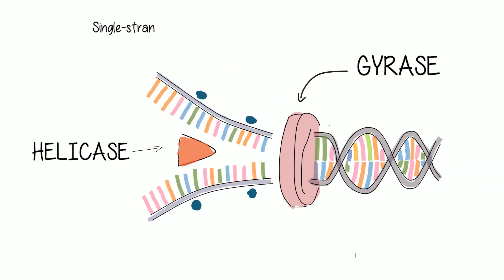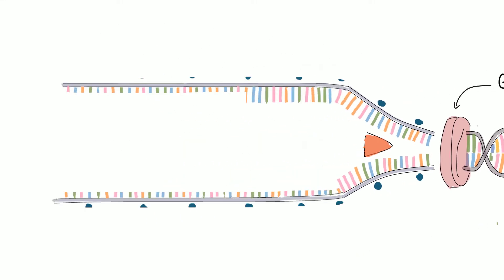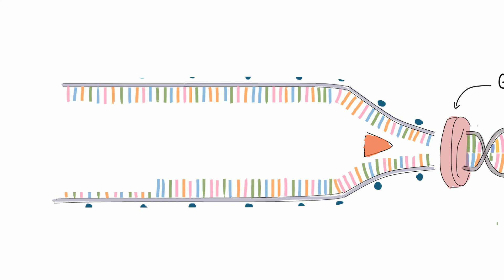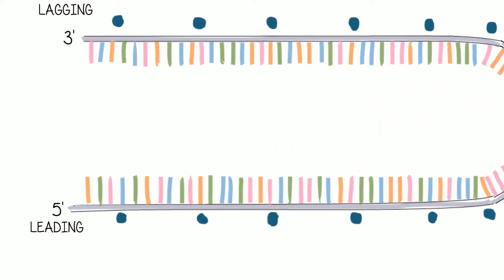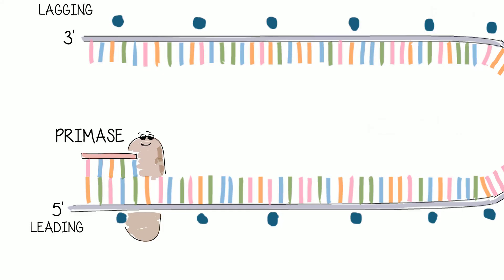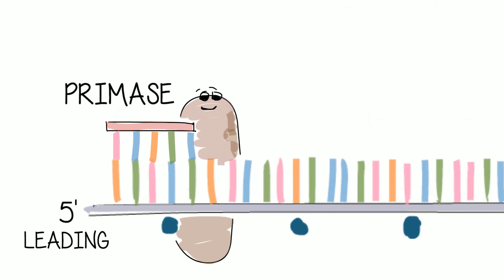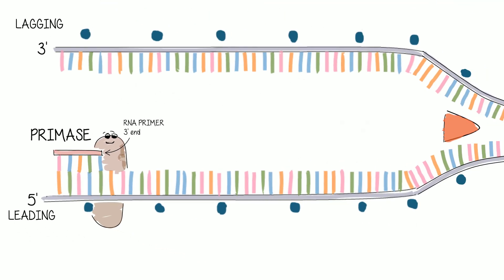Single-stranded binding proteins stabilize the unwound molecule, maintaining its single-stranded state for the DNA polymerase to work. An enzyme called DNA primase synthesizes short RNA sequences called primers, about five to ten nucleotides long, that act as an initiation point for DNA synthesis. The RNA primers provide a three-prime end for DNA polymerase III to begin its construction.